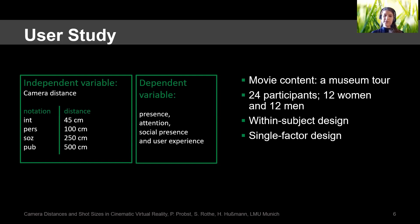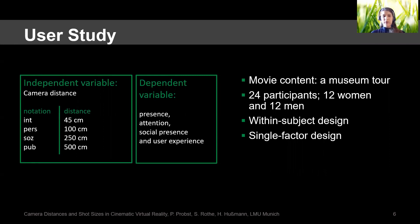In our user study, we showed a movie to 24 participants. In the movie, an actor gave a museum tour. In each scene, the actor was placed at a different camera distance, so we used a within-subject design. Each participant got to see the same movie and all variations of the independent variable. After they saw the movie, they were asked to fill out a questionnaire about our dependent variables, which were presence, attention, social presence, and user experience, which was most important to us.